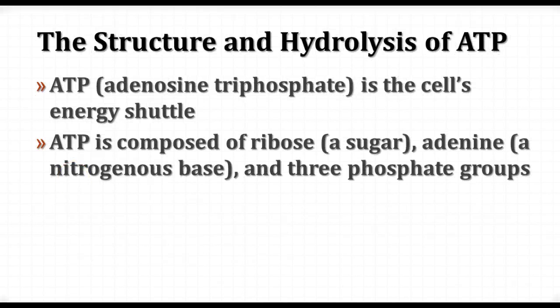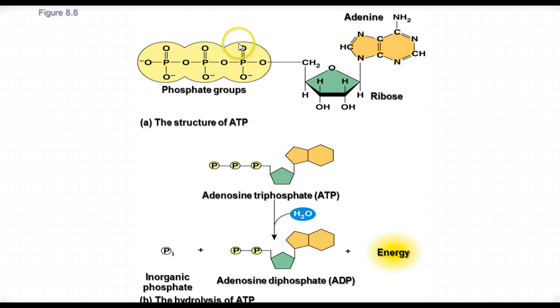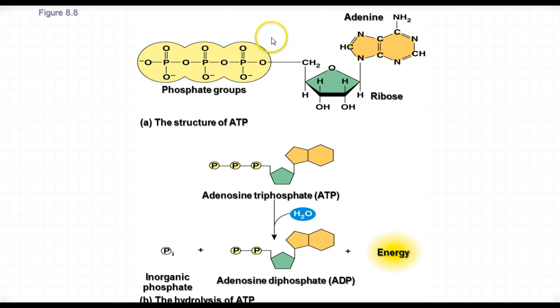ATP has three main parts: ribose, which is a sugar; adenine, which is a nitrogen base; and three phosphate groups. If you take the main part of the ATP molecule — one phosphate, the ribose, and the adenine — those three parts together make up a nucleotide for RNA. But when you add the other phosphates on there, it changes the character of the molecule.